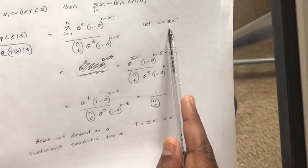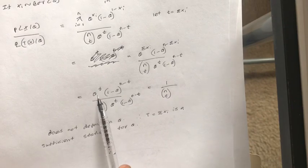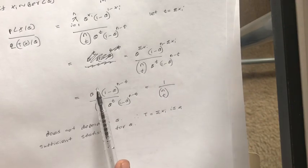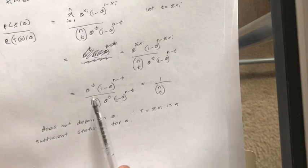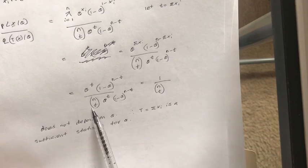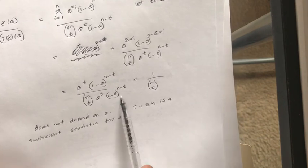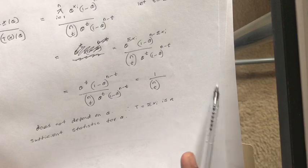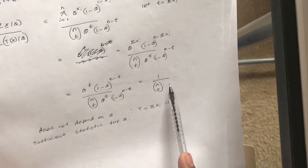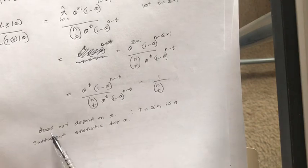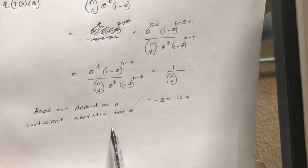Since the sum of X_i equals t, we can write the numerator as theta to the power t times (1 minus theta) to the power (N minus t), divided by N choose t times theta to the power t times (1 minus theta) to the power (N minus t). These terms cancel out and the only thing that remains is 1 over N choose t. This expression does not depend on theta, so T(X) is a sufficient statistic for parameter theta.